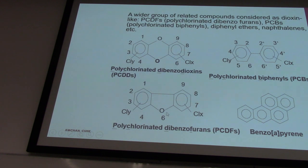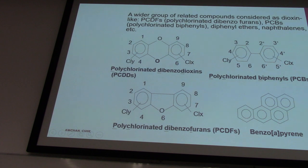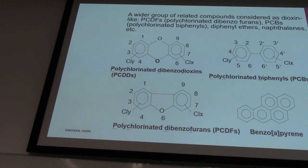If it's only one oxygen, we call them furans — PCDF. And if there is no oxygen linking two phenyl rings, we call them polychlorinated biphenyls, PCBs — 多氯聯苯. It depends on the numbers of chlorination. These chemicals may come from electric products — in plastic — because they form a very good compound to avoid electrical discharge.